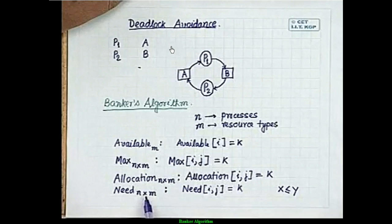Max is the maximum number of resources for all processes — an N×M matrix. Allocation is also an N×M matrix representing how many resources are currently allocated to each process. Need is the fourth data structure: Max demand minus Allocation, giving us what each process still needs.